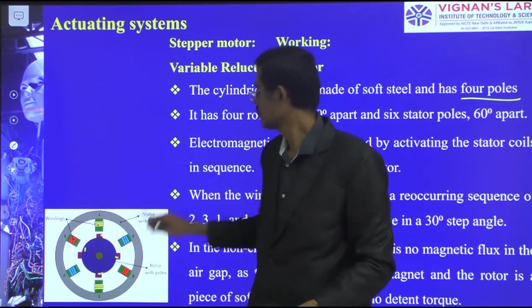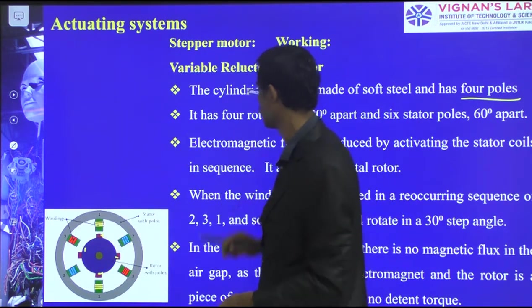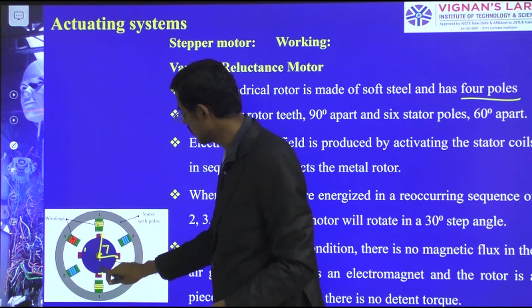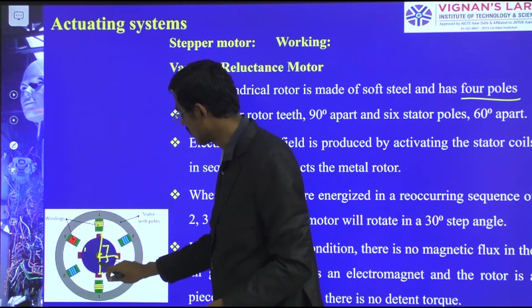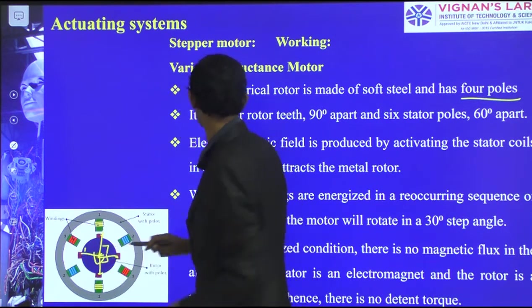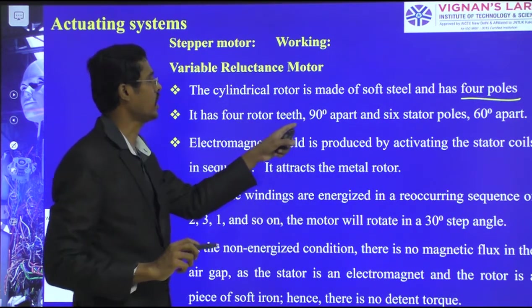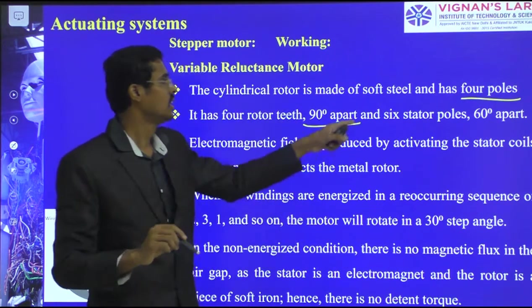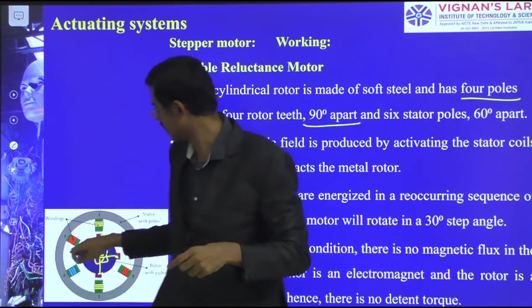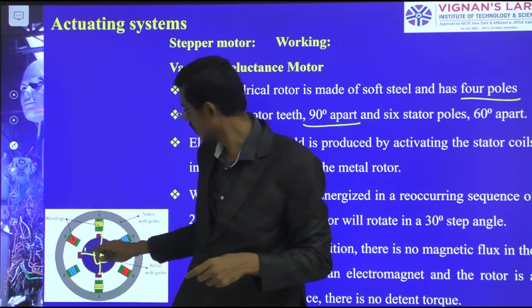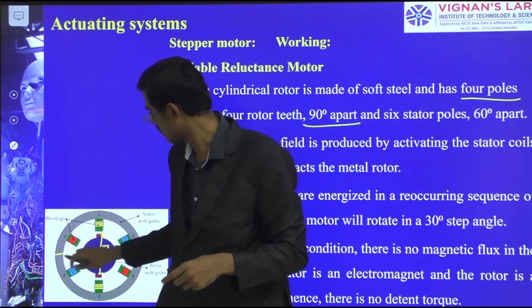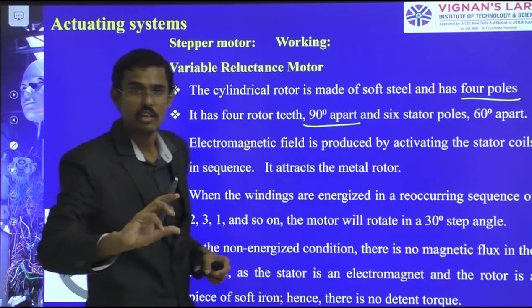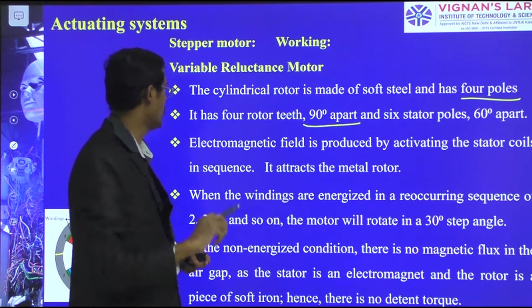The rotor has four rotor teeth each placed at 90 degrees apart. There are six stator ports — one, two, three, four, five, six — and four rotor teeth. This arrangement forms the basis of the variable reluctance stepper motor operation.